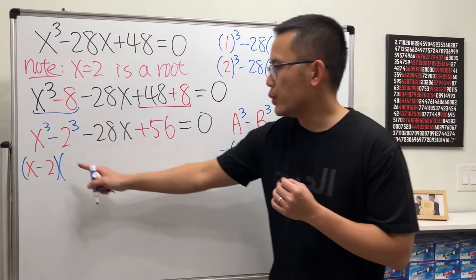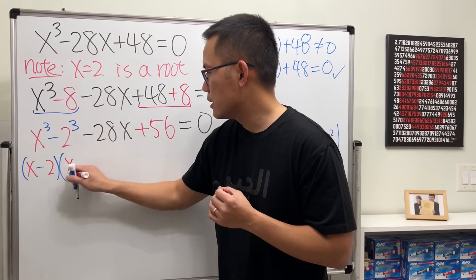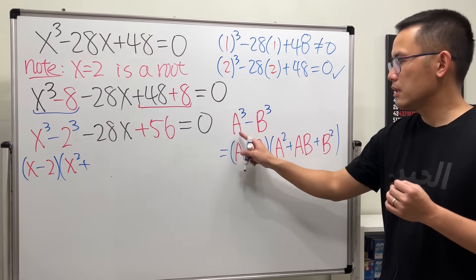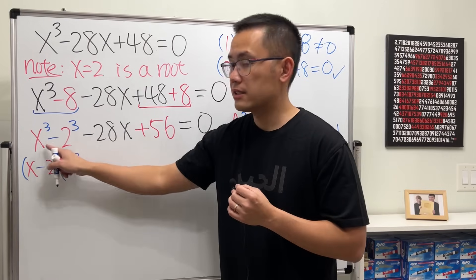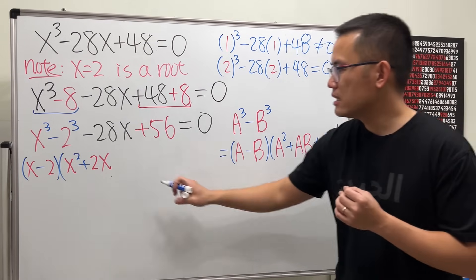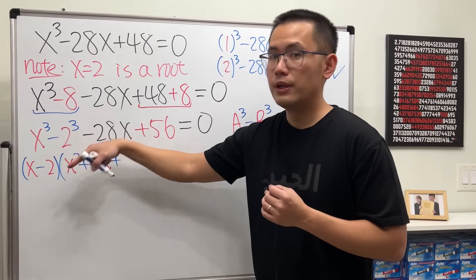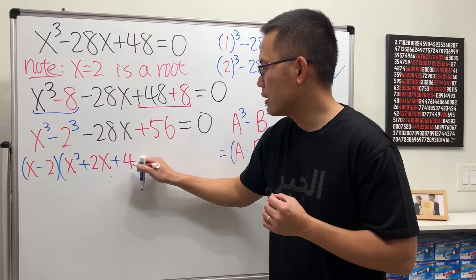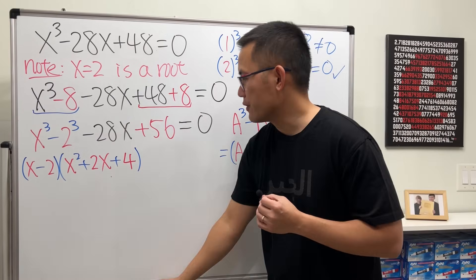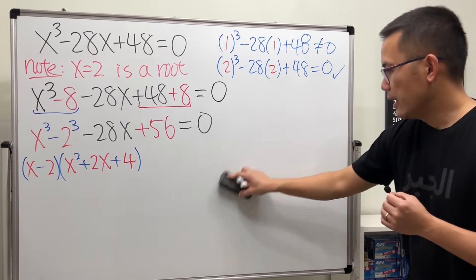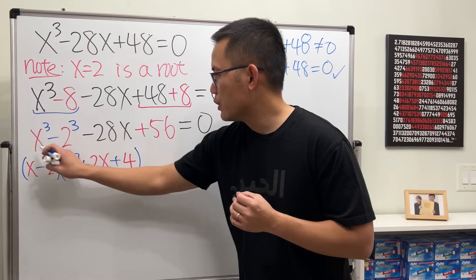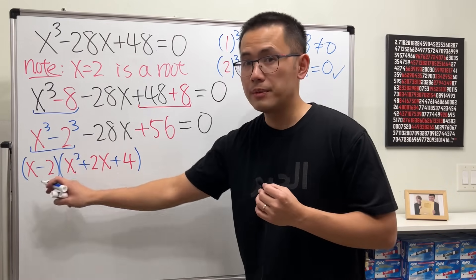In our case here, we have x and 2 as the a and b. Let's just go ahead and use the formula. So we will get (x minus 2) times a², so we will have x², and then plus, it says a times b, so in this case we have x times 2, which is 2x. And then lastly, we have to add 2², which will give us 4. This is because of the 2², that's how we get a 4.